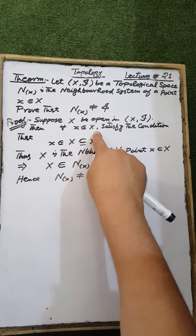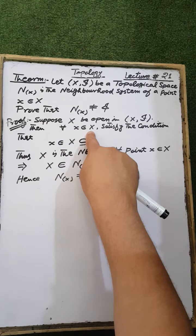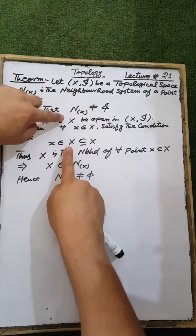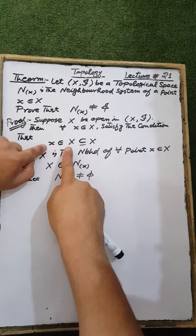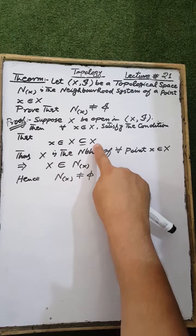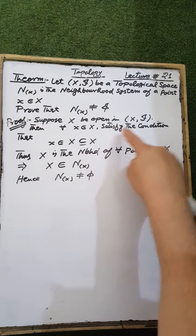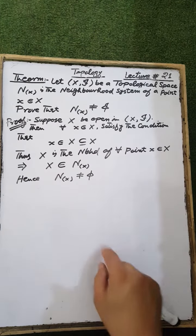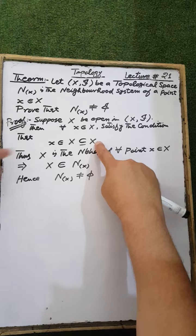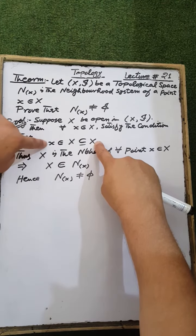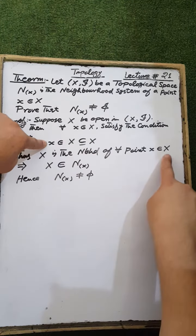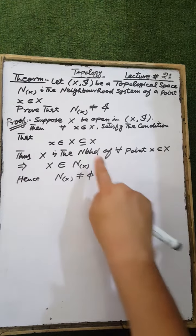For each x contained in the ground set X, there exists an open set X such that x is contained in the open set X, which is a subset of X. This set X is the ground set X by itself. That is, the ground set X is a neighborhood of a point x containing the ground set X.